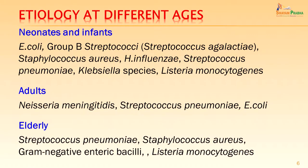The etiology of meningitis differs in different age groups. In neonates and infants the common organisms are E. coli, group B Streptococci or Streptococcus agalactiae, H. influenzae along with Staphylococcus aureus. In adults the three major pathogens are Neisseria meningitidis, Streptococcus pneumoniae and E. coli. In the elderly the same organisms can be present along with Staphylococcus aureus, other gram negative bacilli and Listeria monocytogenes.